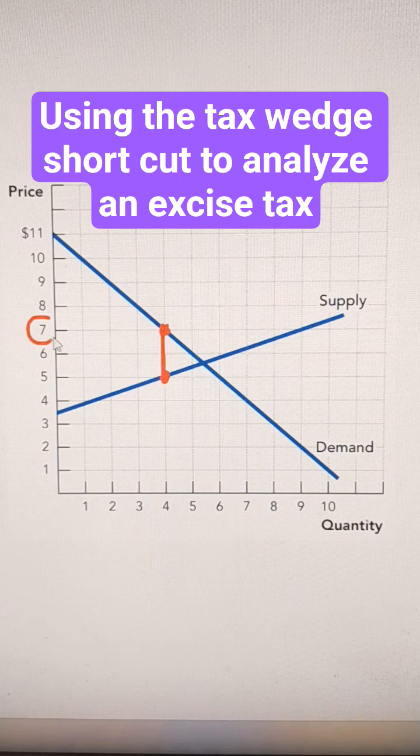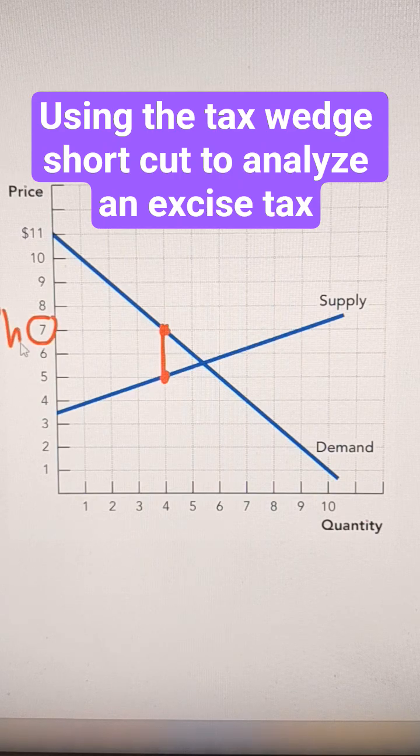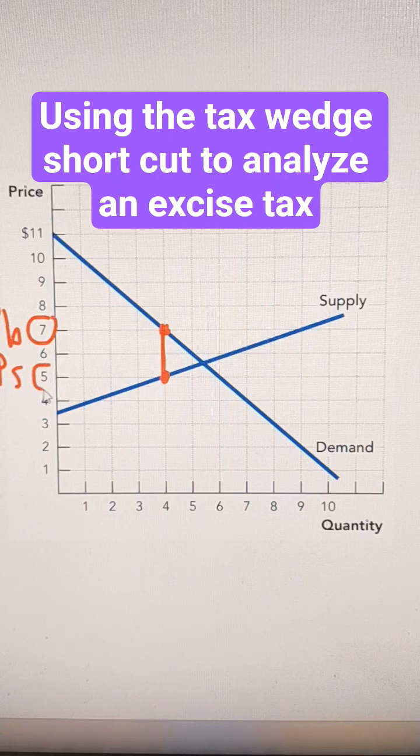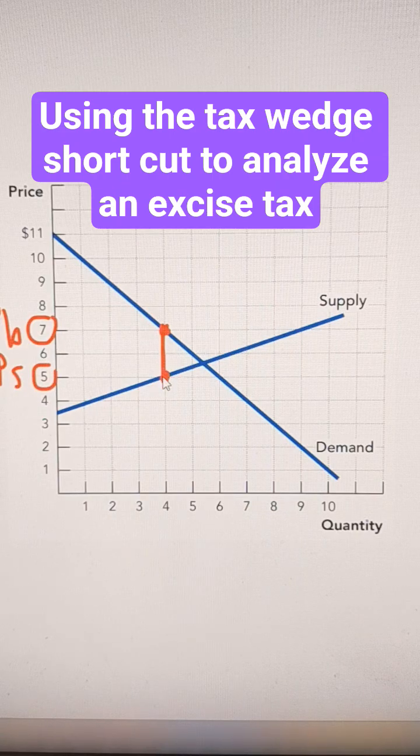This will be the price that the buyers pay. So the buyers are going to pay a higher price, $7. The price that the sellers get to keep would be $5. The distance between the two is the same as the wedge.